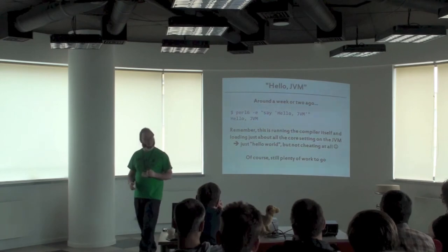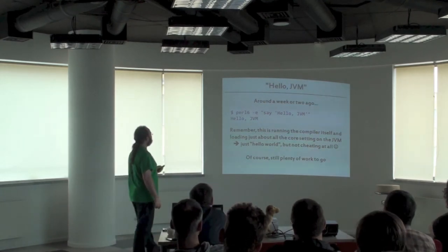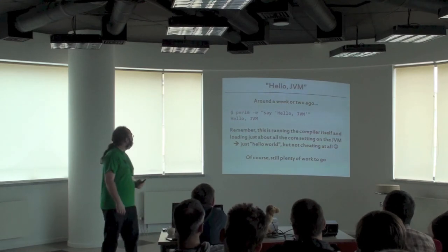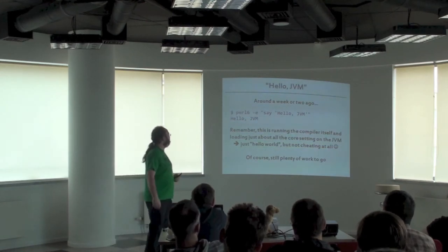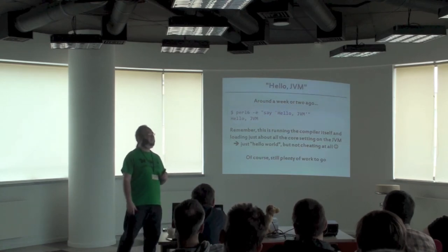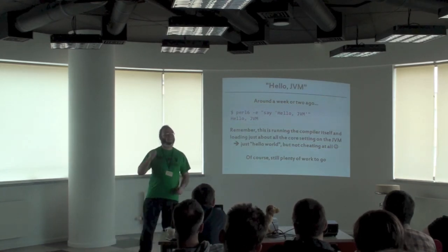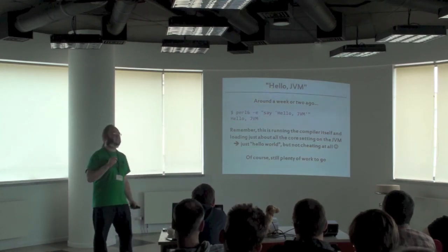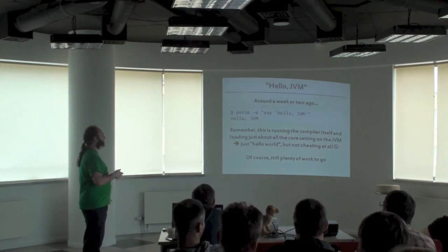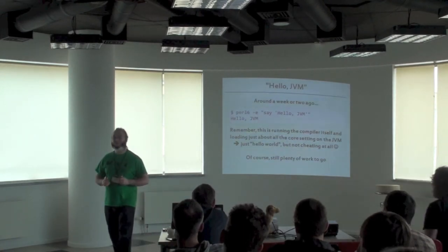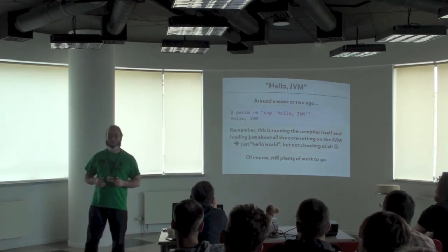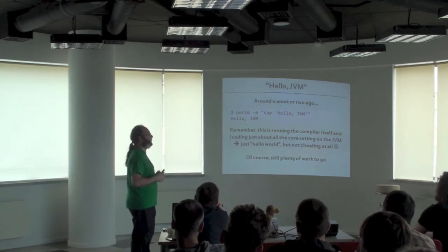Around a week or two ago, Perl6 — Rakudo — running on the JVM said 'hello JVM' and it popped out hello JVM. We can do hello world. Can we do anything else? Actually, a reasonable number of things. One of the things about working through the core setting is it actually touches quite a lot of pieces of the Perl6 code, including basic list operations and hashes. There's a whole load that does work, and a whole load that kind of doesn't. But basically we've got the entire standard library cross-compiled — it's not a problem of how we compile it anymore, just which bits don't actually work yet.